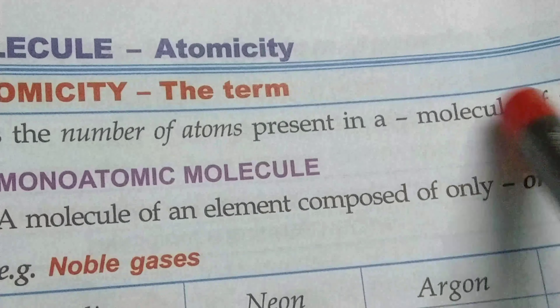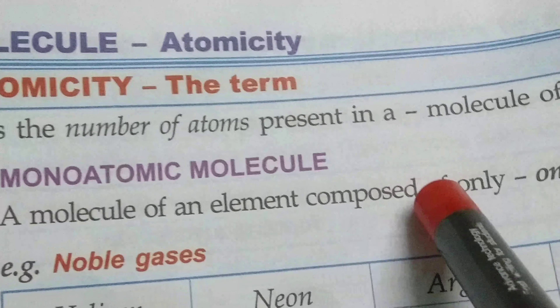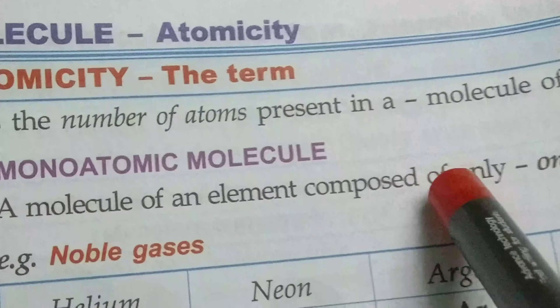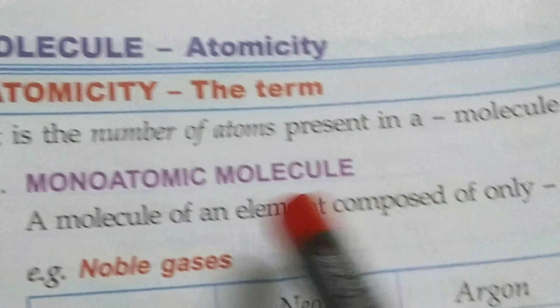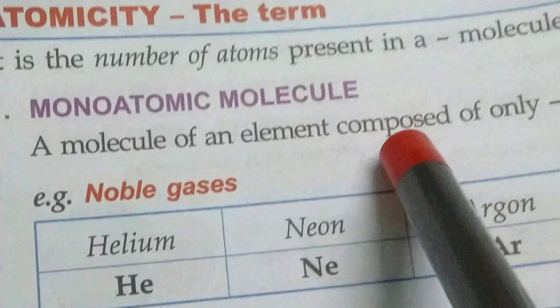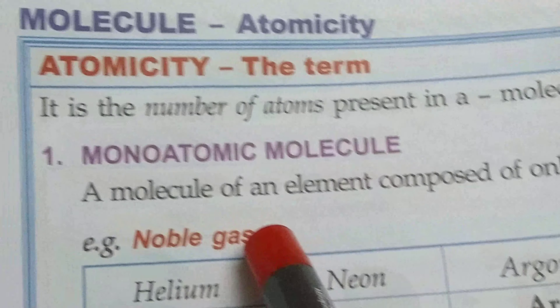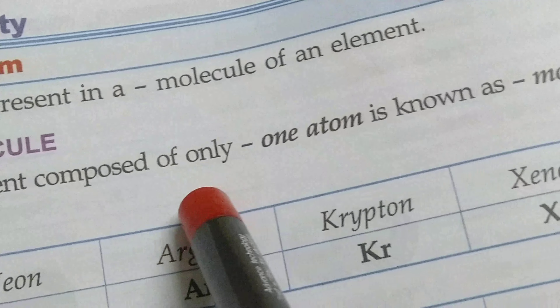Koi element ka ek molecule ke andar jitna number atoms present hai — the number of atoms present inside a molecule of an element — it is known as atomicity. Monoatomic molecule: a molecule of an element composed of only one atom is known as a monoatomic molecule.